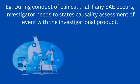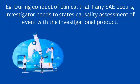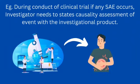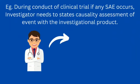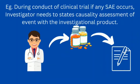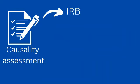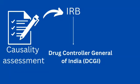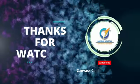For example, during the conduct of a clinical trial, if any serious adverse events occur, the investigator needs to state a causality assessment of the event with the investigational product. That has to be analyzed by the Institutional Review Board, and all these data have to be submitted to the regulatory authority or DCGI.